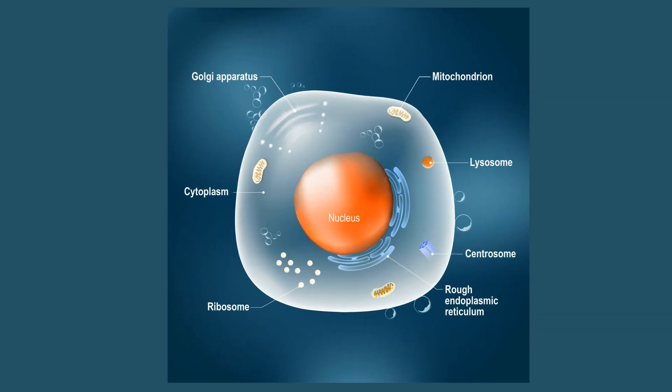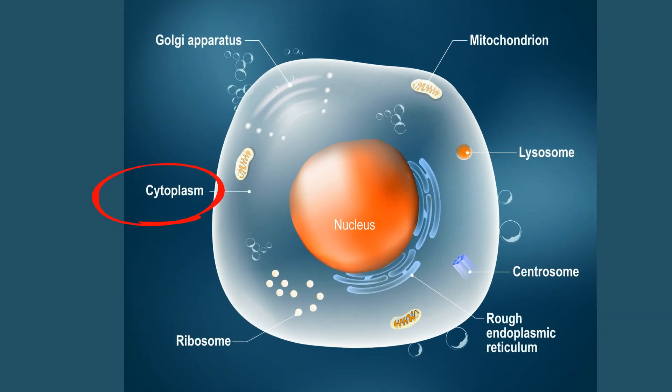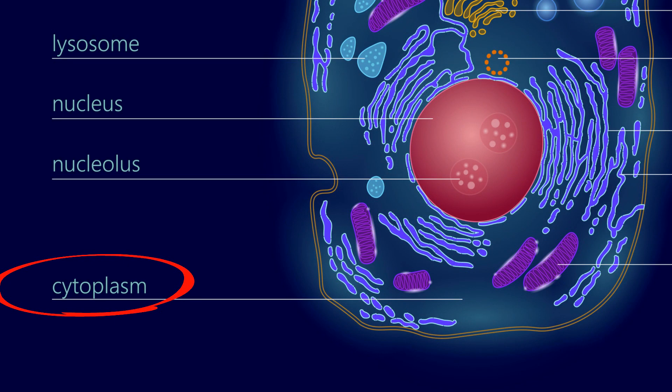The cytoplasm is the fluid found in cells. It is found in both eukaryotic and prokaryotic cells. The fluid of the cytoplasm is called the cytosol, and it's made up mainly of water.